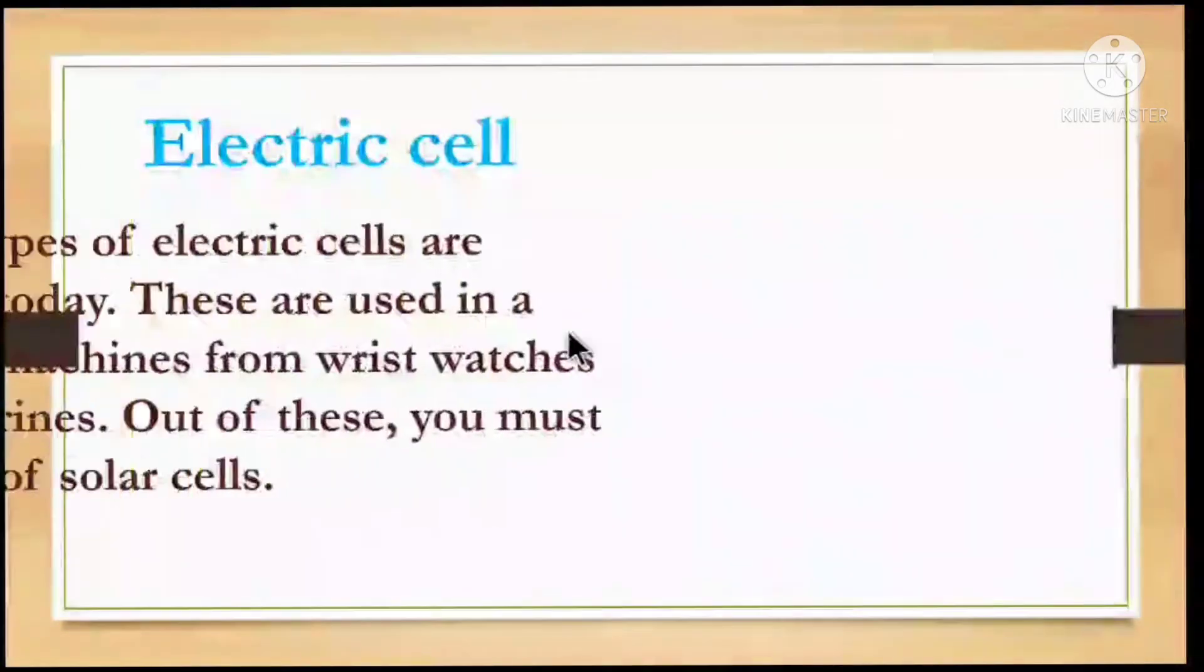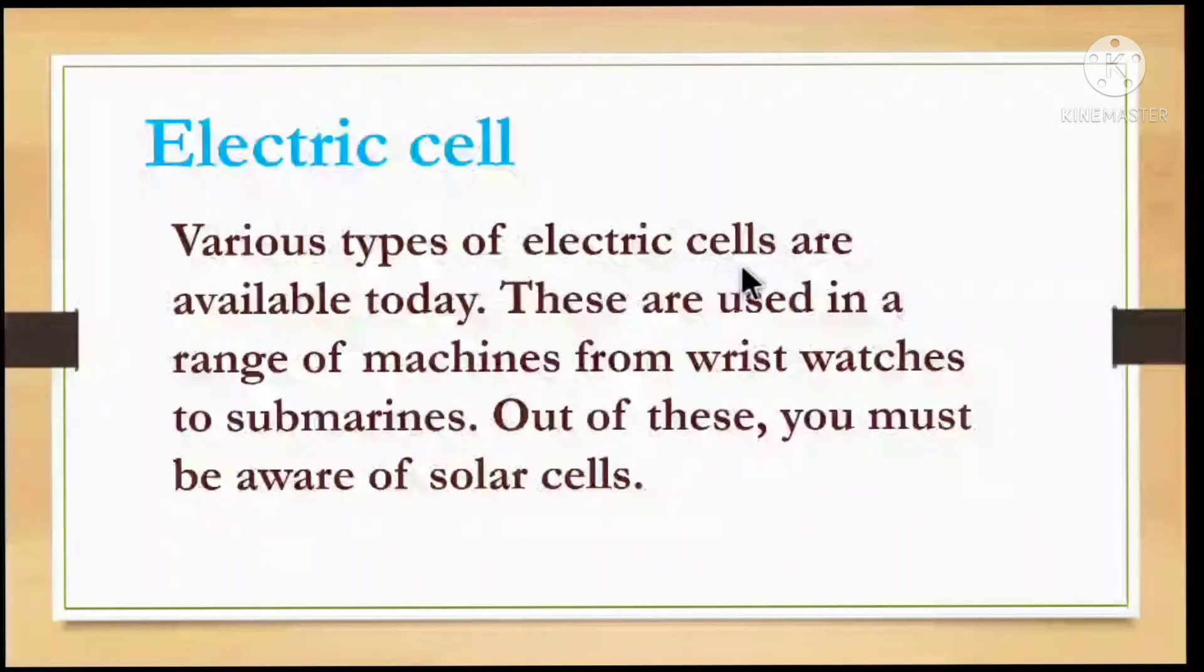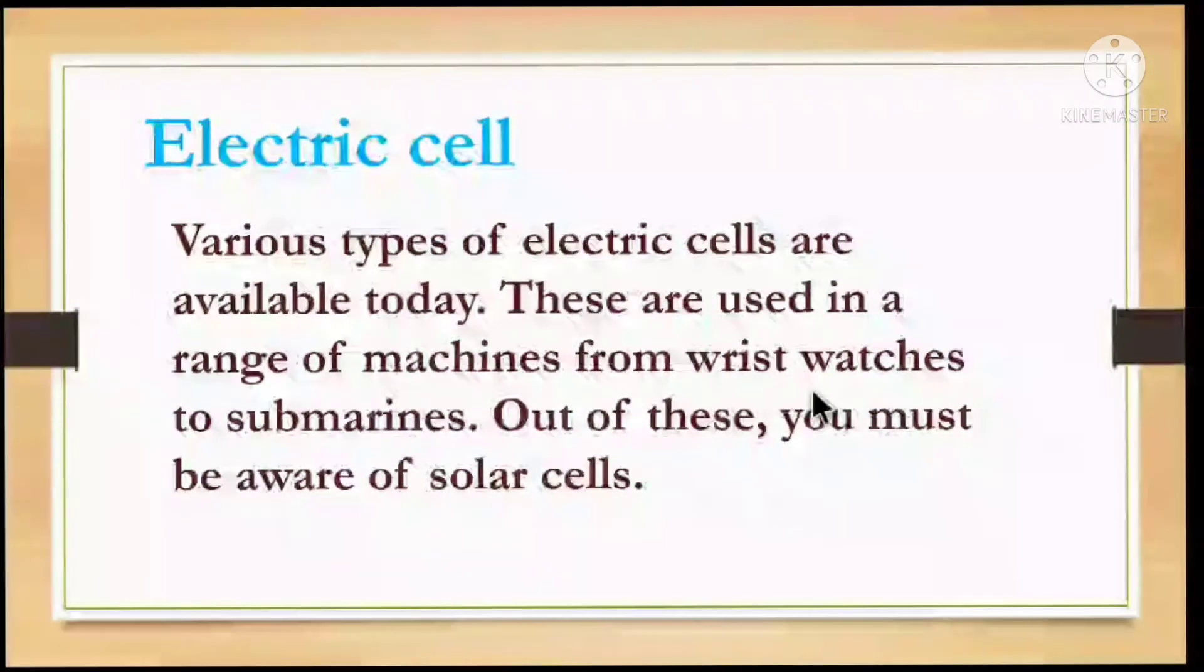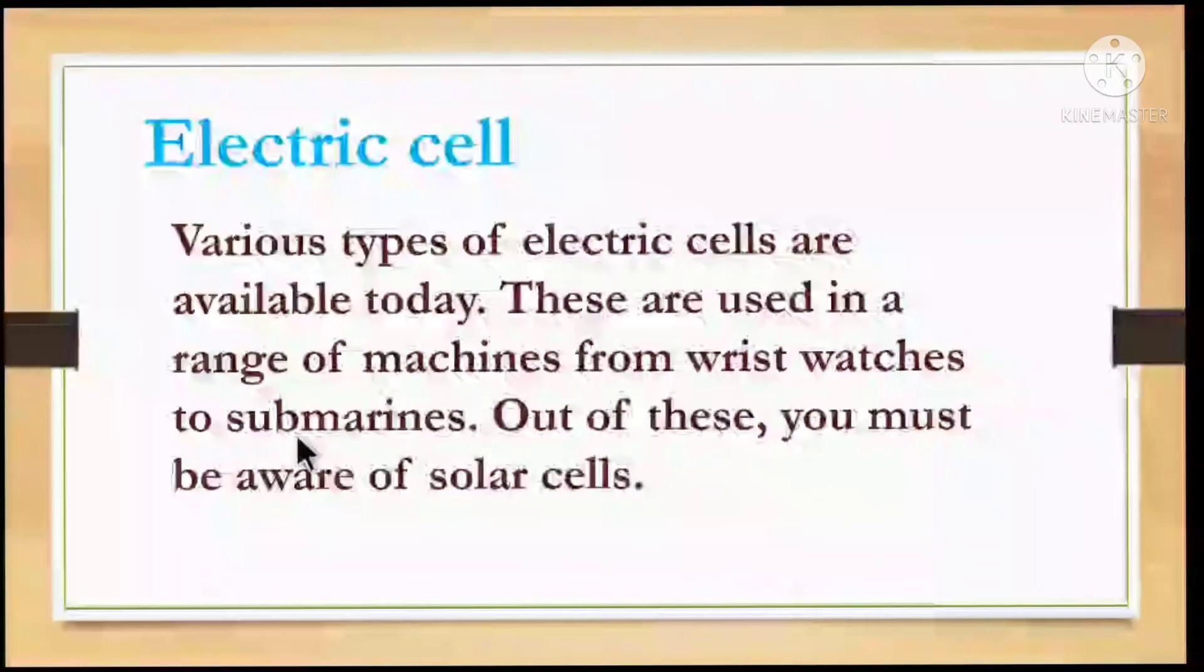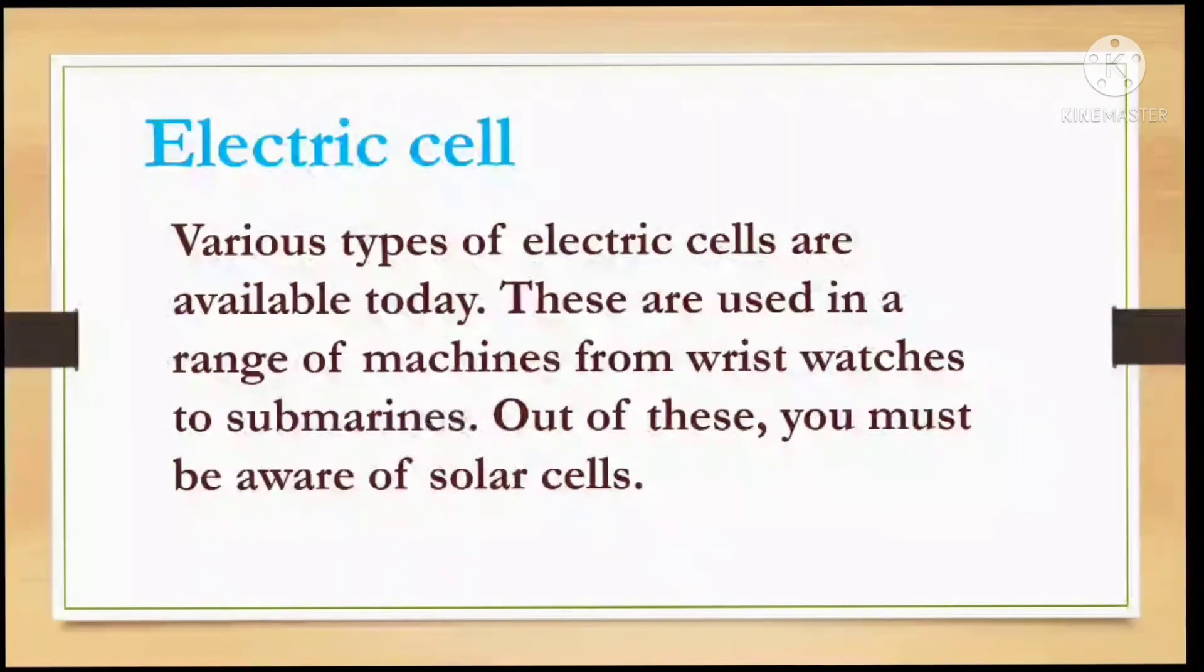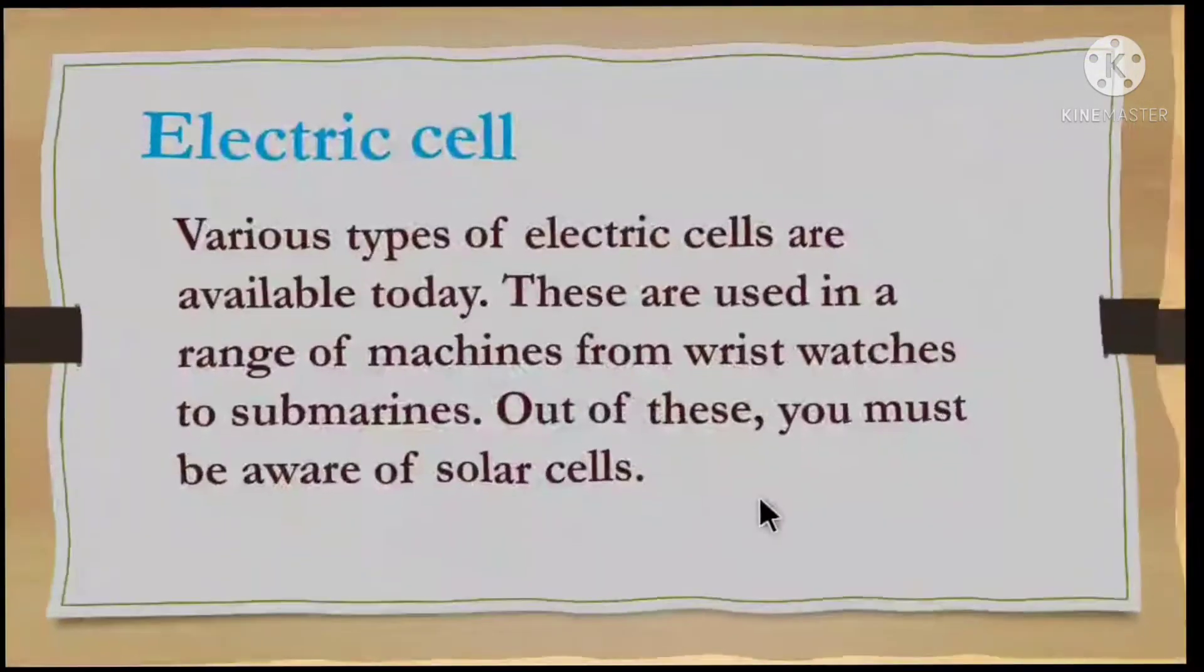Electric Cells. Various types of electric cells are available today. These are used in a range of machines from wristwatches to submarines. Out of these, you must be aware of solar cells. The first type is dry cells.